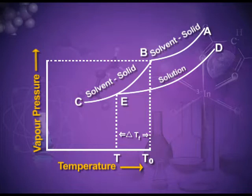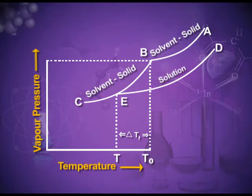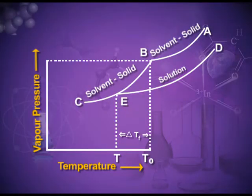Below this temperature we have only solvent in the liquid state. From here you can also understand the definition of the freezing point: it is the temperature at which the vapor pressure of the solid solvent equals the vapor pressure of the liquid solvent. For the vapor pressure curve of the solution, you can see that the solution freezes at some temperature below the normal freezing point. T is below T₀, so there is depression in the freezing point. Delta Tf is the value of this depression. The more solute you add, the more the lowering of vapor pressure, and the more the depression in freezing point.